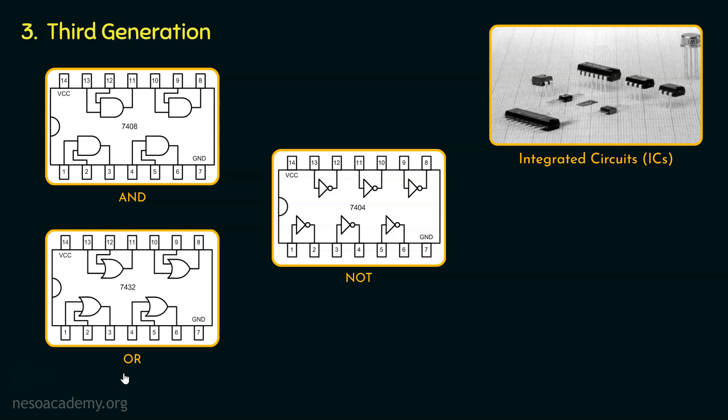Additionally, the IC for OR is numbered as 7432. Notice, all these ICs have positive indexing notches, where the pins left to them are used for the power supply. So clearly, with the advent of integrated circuits, miniaturization became a reality in true sense.